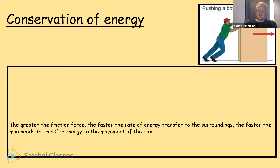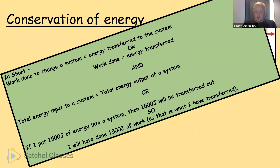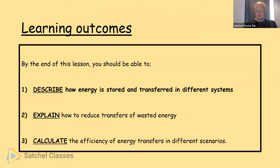The greater the friction force, the faster energy is transferred away to the surroundings, and the faster the man needs to transfer energy to keep the box moving. In short, work done to change a system equals energy transferred to the system. Work done is the same as energy transferred — so if I put 1500 joules of energy into a system, 1500 joules of work is done.